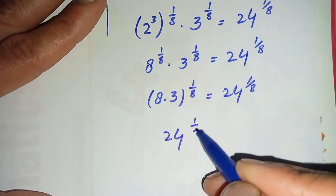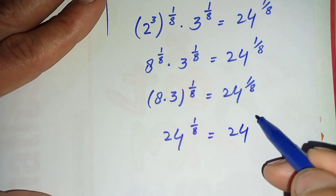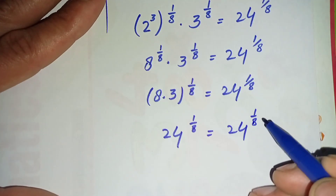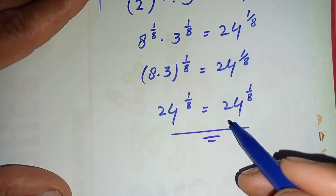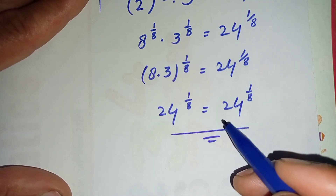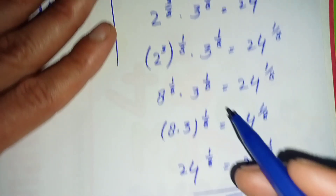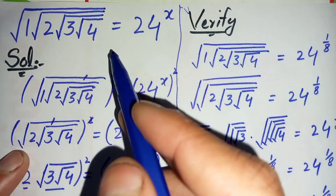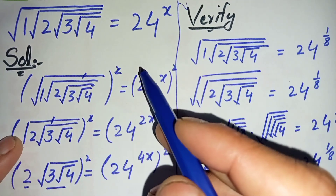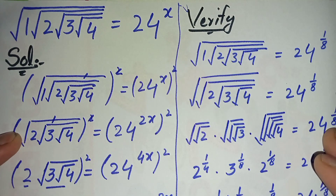So 8 times 3 is 24, giving 24 raised to power 1/8 equals 24 raised to power 1/8. Both sides are equal, confirming that x equals 1/8 is the correct and exact solution. If you like this video, don't forget to subscribe to my YouTube channel. Thanks for watching.